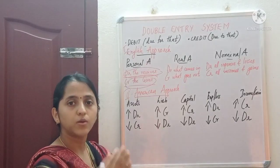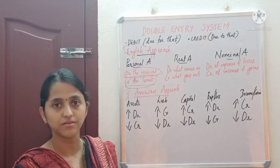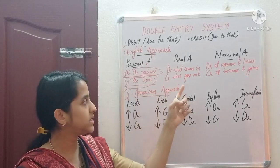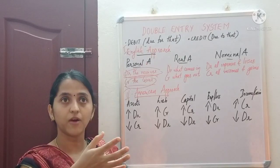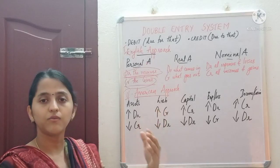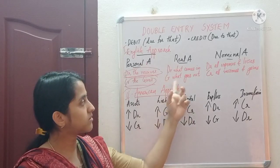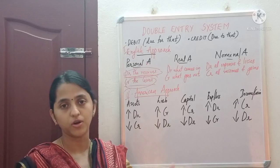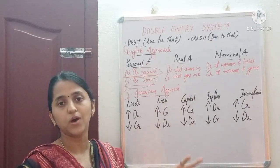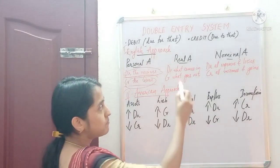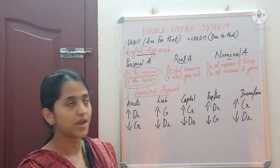For real account, the rule is: debit what comes in and credit what goes out. If we purchased equipment, the equipment comes into the business so we debit the equipment account. We purchased the equipment by paying money, so cash goes out. Cash is also a real account, so we credit what goes out. The entry will be equipment account debit to cash account.